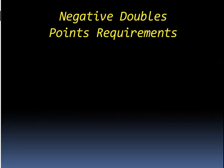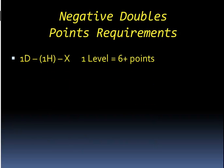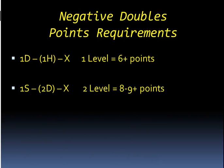Let's begin. First, the point requirements for negative doubles—the responder is about half of what it was when we discussed takeout doubles last week. At the one level, about six points or more. So if it goes one diamond by our partner, one heart by righty, a double by us—six points should do it.